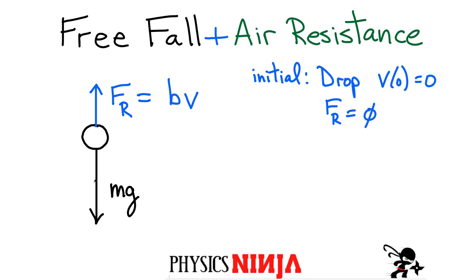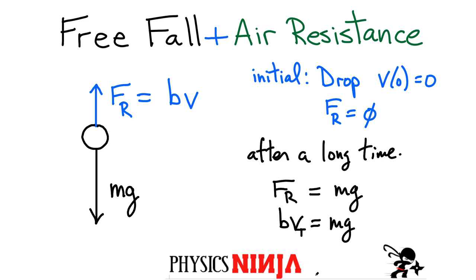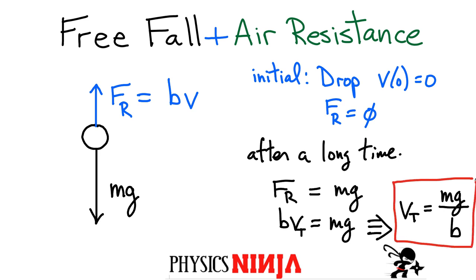As I start accelerating downward, this resistive force is going to get bigger and bigger until it is equal to the weight. After a long time both forces will balance, so we'll have B multiplied by V equal to mg. This is my final speed — I can never get faster than that. This is what they call the terminal velocity. Rearranging, the terminal velocity is V_T = mg / B — simply the weight of the object divided by the constant B.